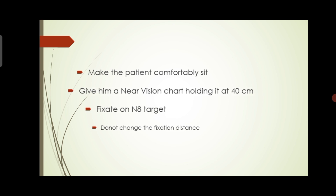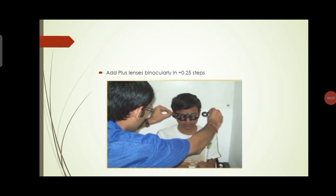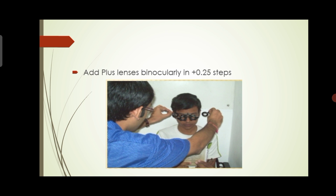Now add plus lenses binocularly in +0.25 steps. You can see how the examiner places the plus lenses binocularly. Tell the patient to look at and fix on the N8 target. Once the patient reports it is clear after adding +0.25, add another +0.25, making it +0.50 total.